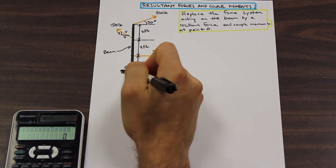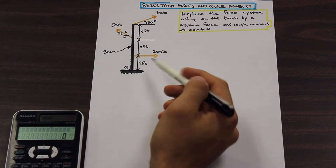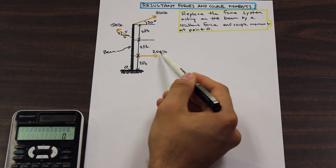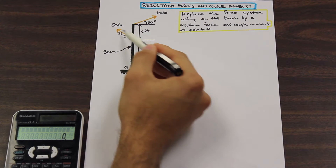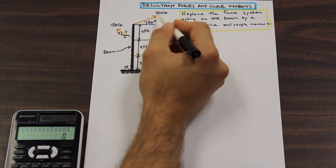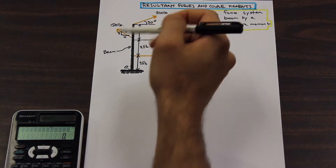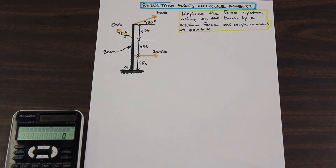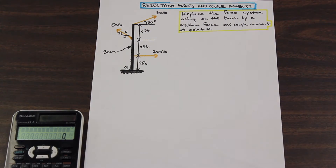So this is point O right here — this is the origin. We have a 200 pound force to the right, a 150 pound force acting up here, and a 300 pound force. My sketch is a little bit off here, but this 150 pound force is acting right here at that two foot marker.